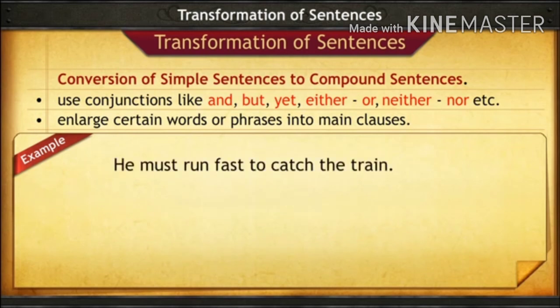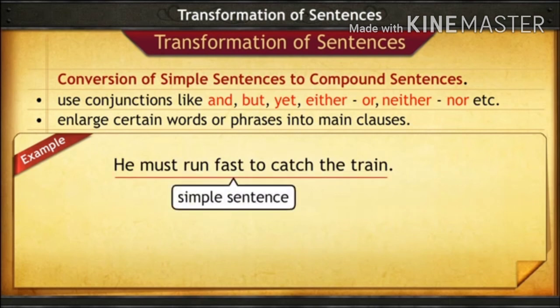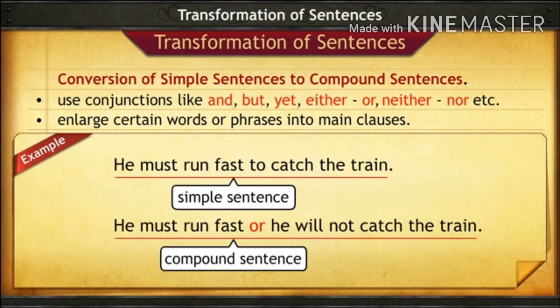Another example — the simple sentence is: 'He must run fast to catch the train.' The compound sentence is: 'He must run fast or he will not catch the train.' This is a compound sentence joined with the conjunction 'or.'